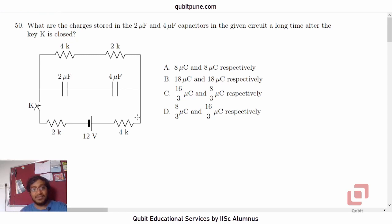This is our fifth MCQ, question number 50 from the exam, which reads: what are the charges stored in the 2 microfarad and 4 microfarad capacitors in the given circuit a long time after the key K is closed? The capacitors can be found here, 2 microfarad and 4 microfarad. We have a 12 volt battery and key K. Let us assume the resistors are of resistance kilo ohms: 4 kilo ohm, 2 kilo ohm, 2 kilo ohm, and 4 kilo ohm.